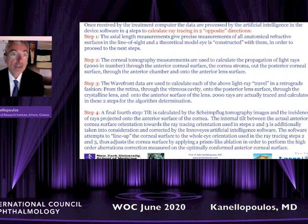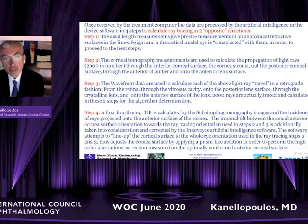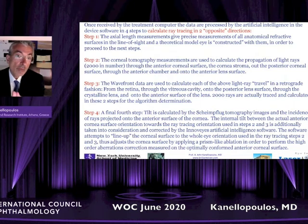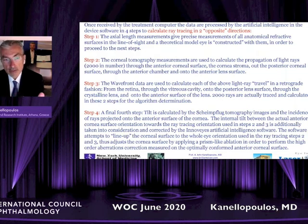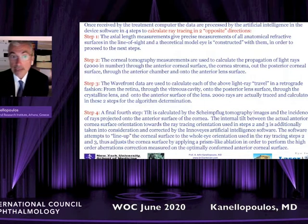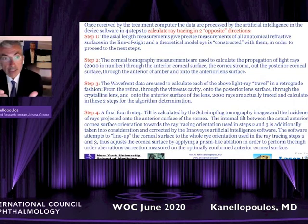Quickly through the four steps — step number one: using the biometry via interferometry that the Sitemap device captures to create a model eye for each individual eye of each patient. In step number two, the Scheimpflug tomography data are used to anterograde ray trace from the device through the air, through the interface of the air with the tear film, through the anterior surface of the cornea, through the cornea, out to the posterior surface of the cornea, into the aqueous, and then through the aqueous to the anterior surface of the lens.